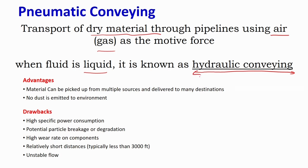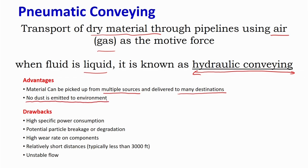Both pneumatic and hydraulic conveying transport solids from one location to another. A key advantage is that material can be picked up from multiple sources and delivered to multiple destinations. If you have two or three locations generating material and need to dump it at one place, you can use pneumatic conveying, whereas belt conveyors would require separate systems. Most importantly, no dust is emitted to the environment — for example, ash transferred via belt conveyor is open to the atmosphere and fine particles can suspend in the air, which is hazardous to health. Pneumatic conveying is therefore environmentally friendly.